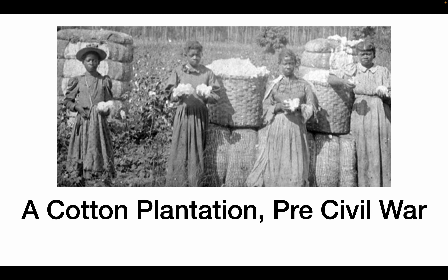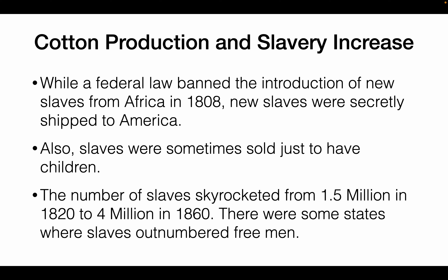Here's a cotton plantation before the Civil War. While federal law banned the introduction of new slaves from Africa in 1808, enslaved people were still secretly being shipped into America, and also being sold from Middle America to the Deep South. Enslaved people were sometimes sold just to increase the enslaved population. During the cotton boom, the number of enslaved people rose from 1.5 million to 4 million, with some states where enslaved people actually outnumbered free men.